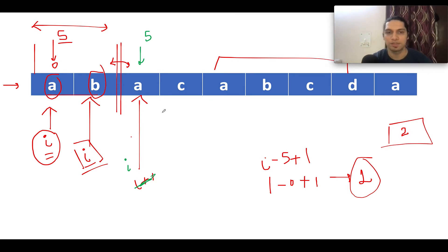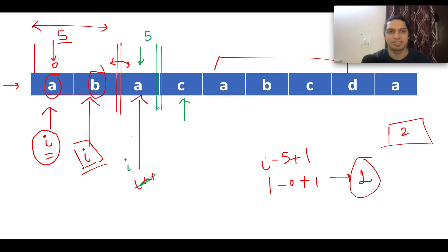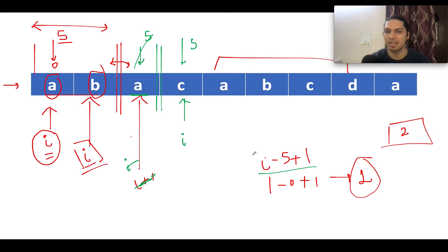Again, I compare i+1 with i. At i+1 we have 'c' — is it contiguous? No, it's not. So we do a reset operation, updating s to the next position and i as well. At the previous index we calculate using the formula i minus s plus one. Since i equals s, the length comes out to be one. One is lower than two, so we skip it.